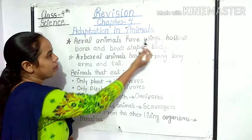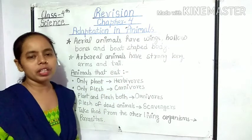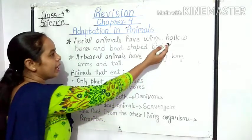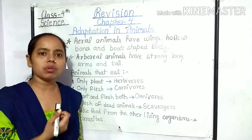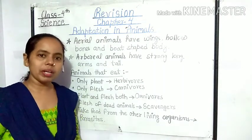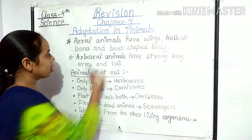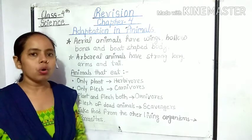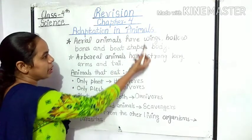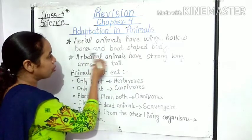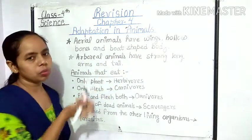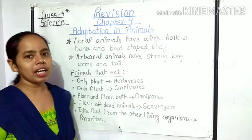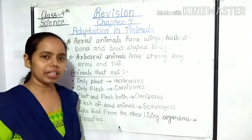Next है aerial animals. Aerial animals have wings — aerial animals के पास wings होती हैं जो उनको उड़ने में help करती हैं। इसके अलावा they have hollow bones. And their body is boat-shaped. उनकी जो body होती है वो boat-shaped होती है, जो उन्हें उड़ने में help करती है। इन तीन features की help से aerial animals हवा में बहुत ही ज़्यादा समय तक रहते हैं।